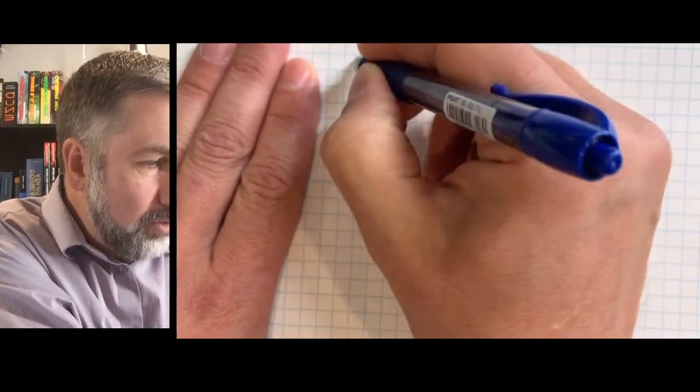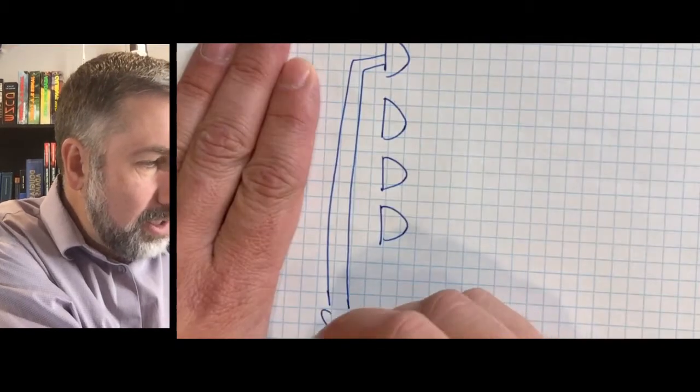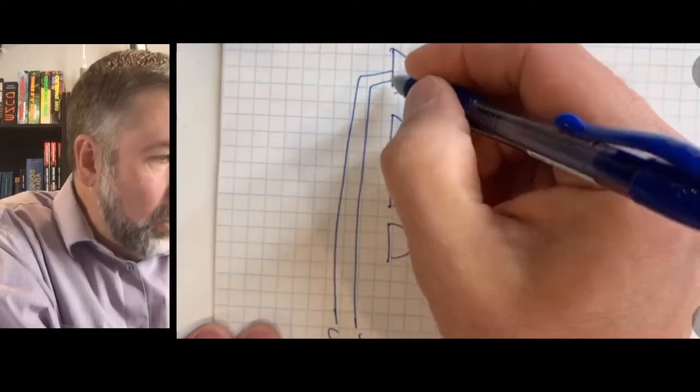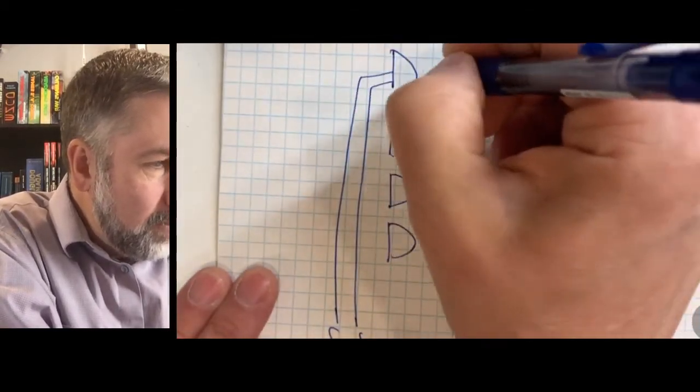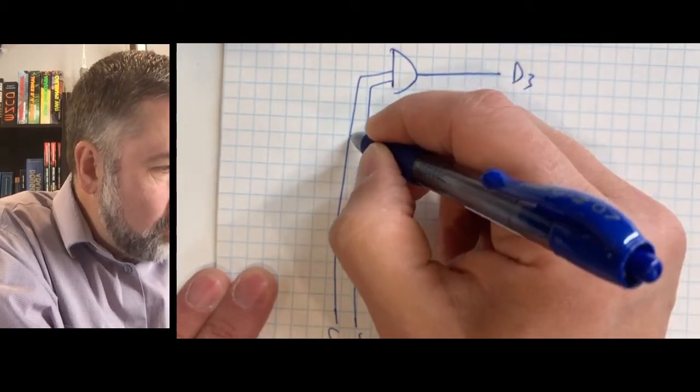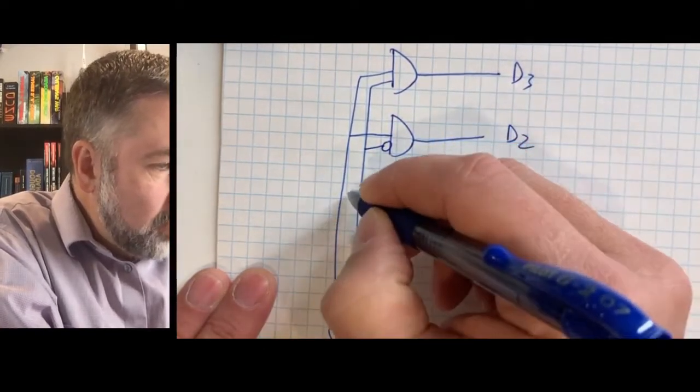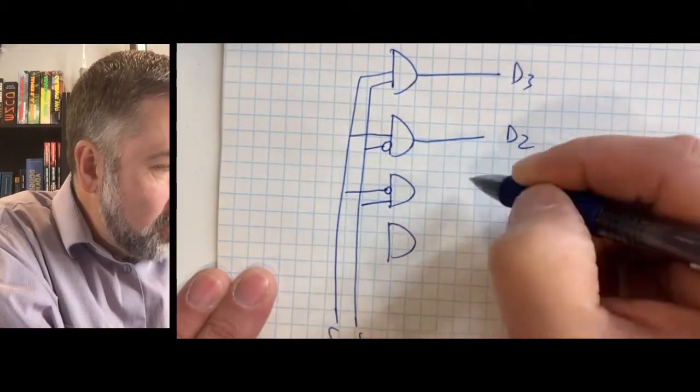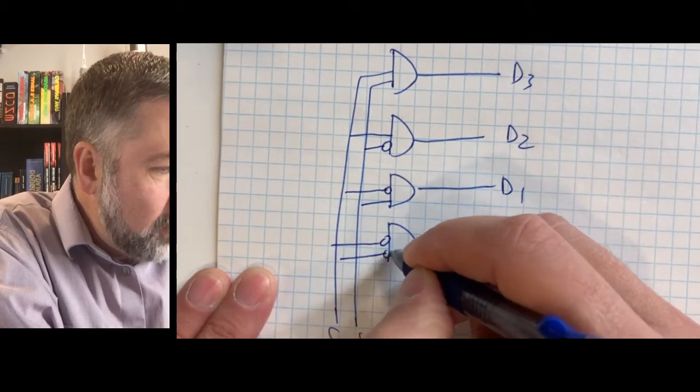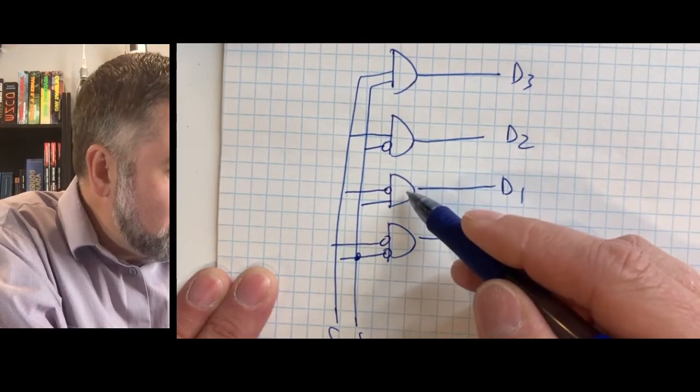We're going to have it's going to look like this. This one is going to be s1 s0 and it's going to be 1 1 for d3. It's going to be s1 is 1 s0 is 0 for d2, it's going to be s1 is 0 and s0 is 1 for d1, and it's going to be both 0 for d0.